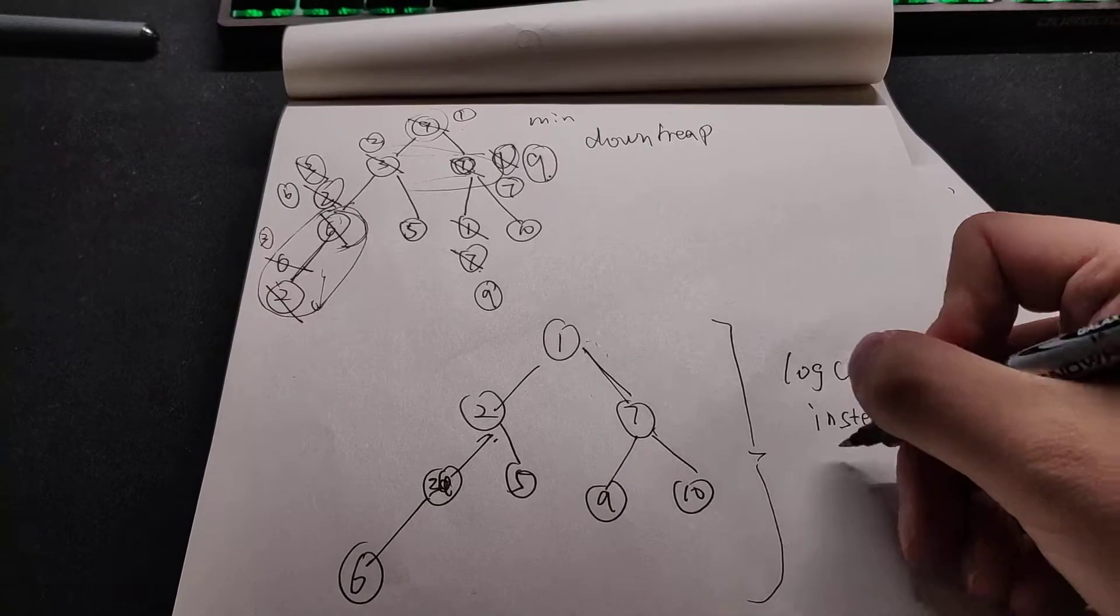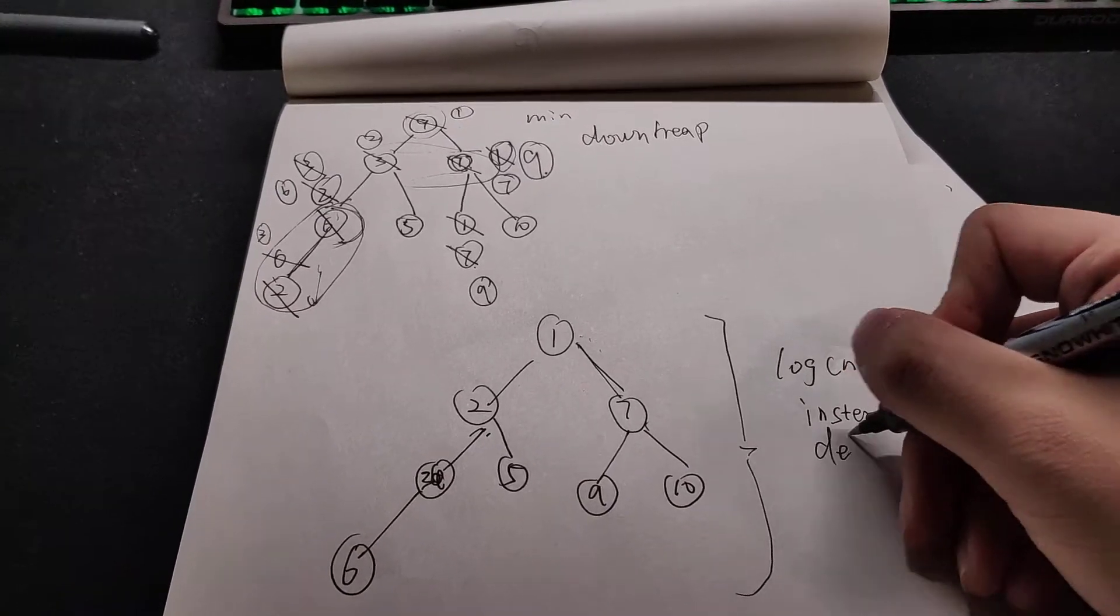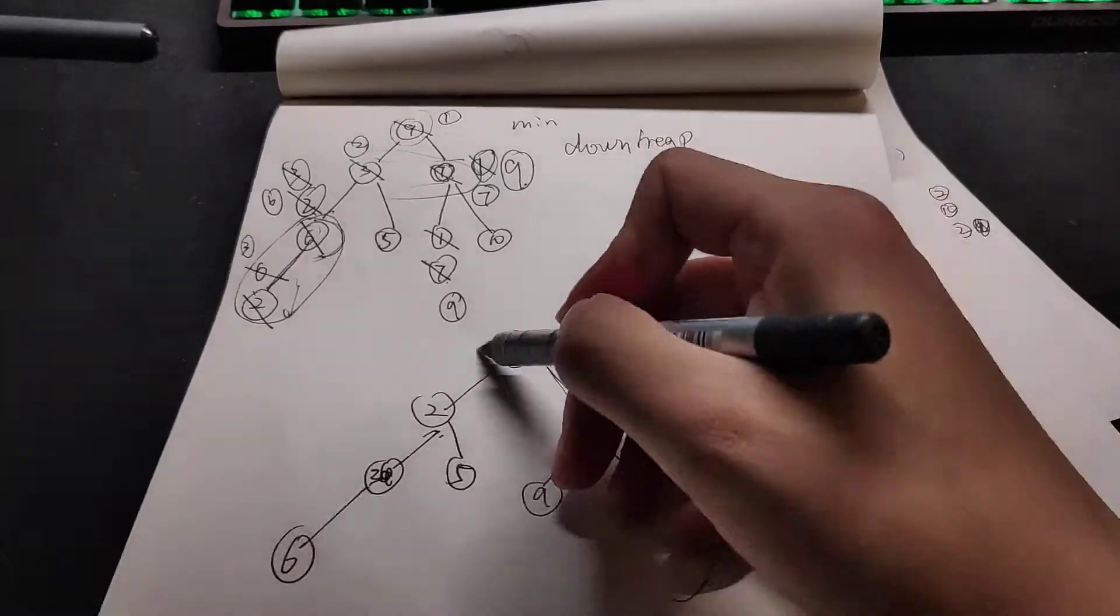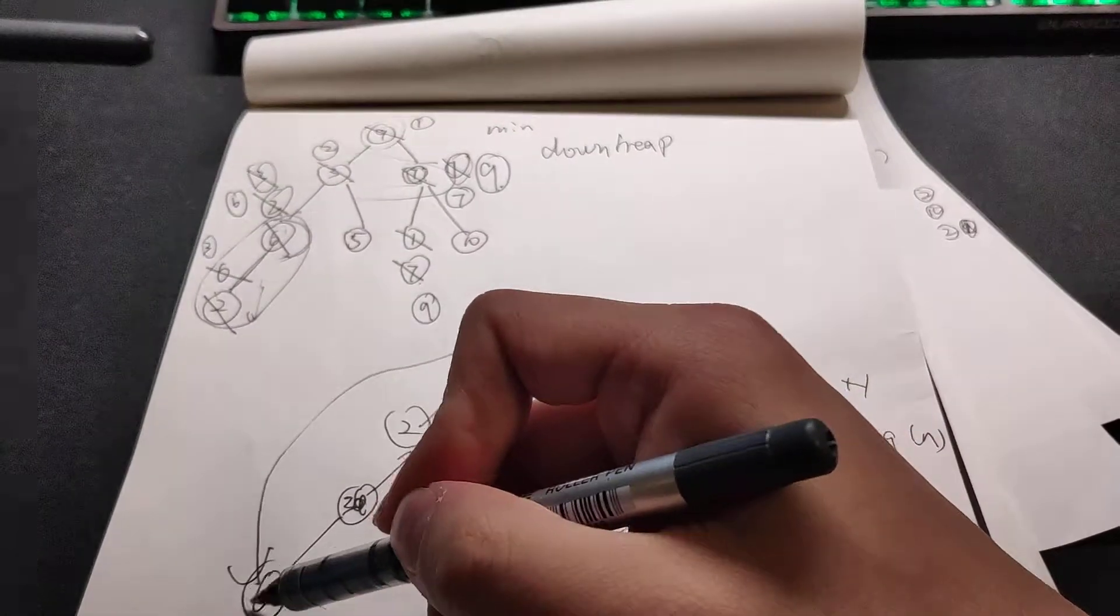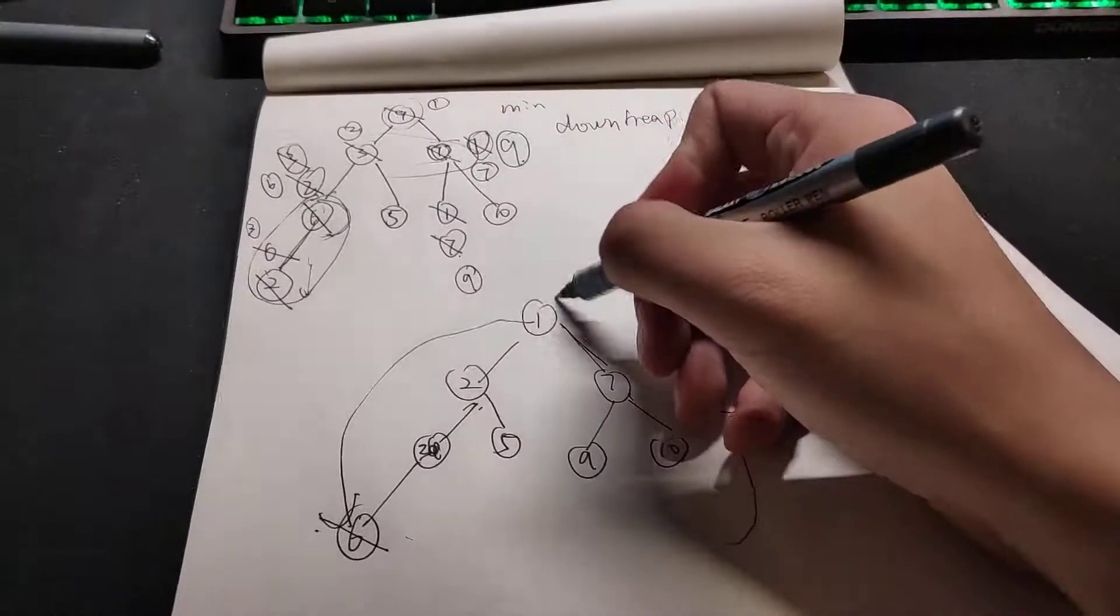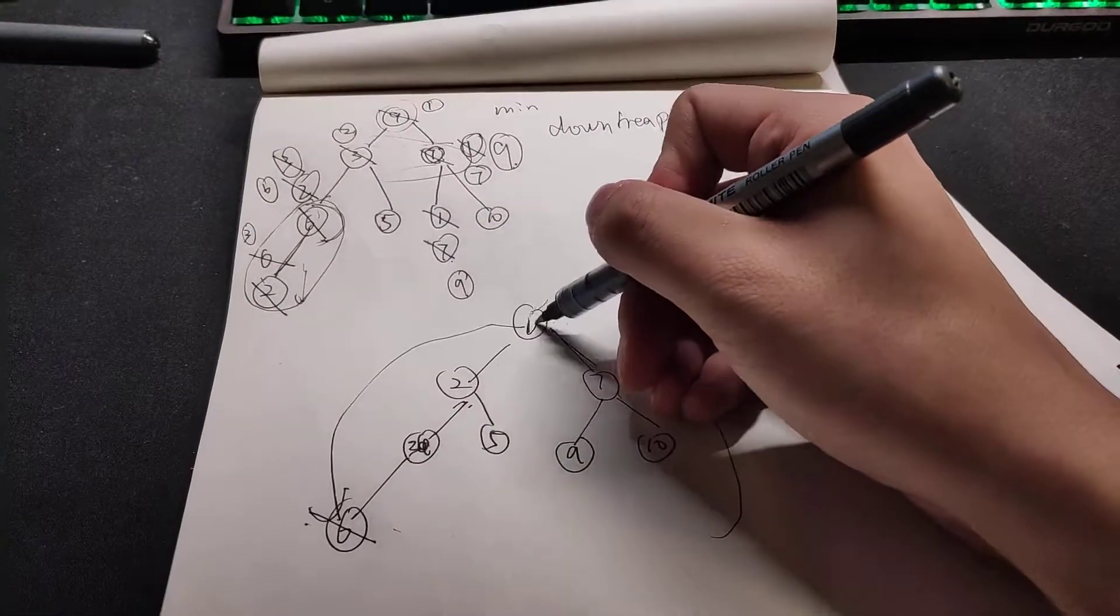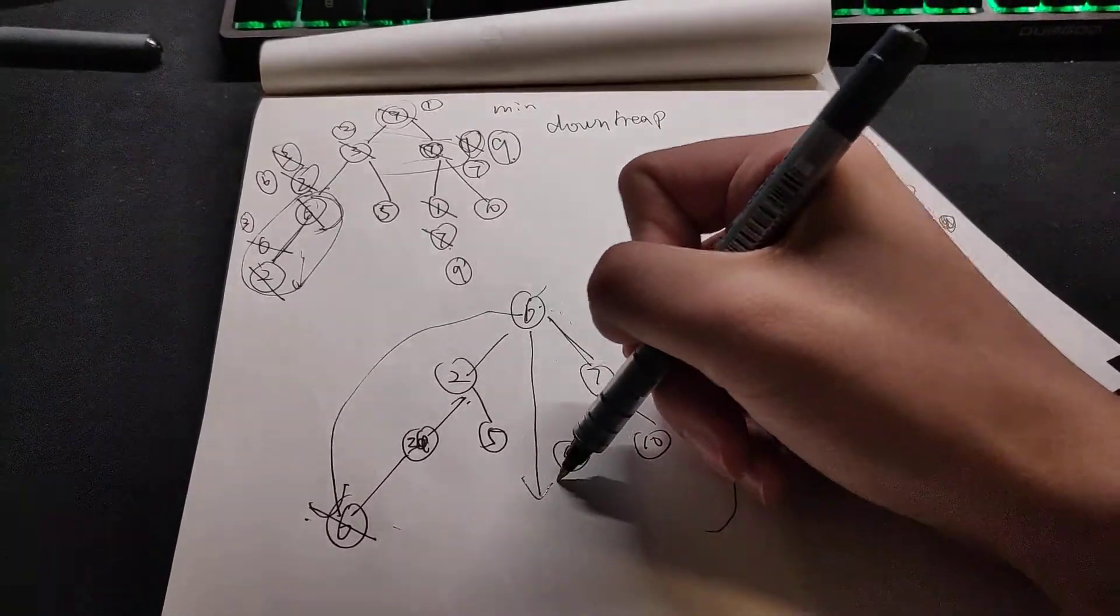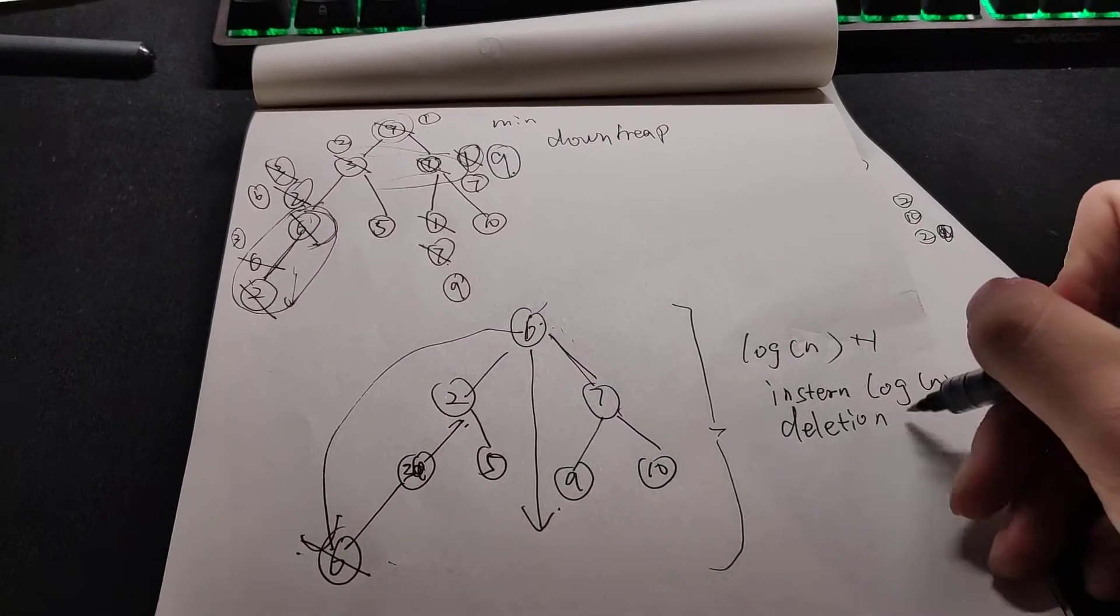And it is similar with the deletion. Because when we delete, we will swap it to the last element. Then we delete the last element. So here is the six. And it will go for the downheap to here. So it's also log n.